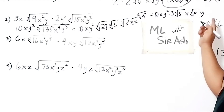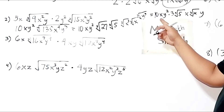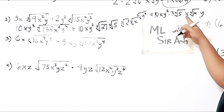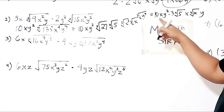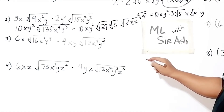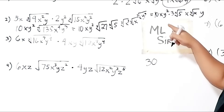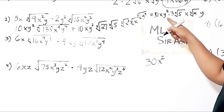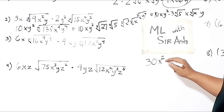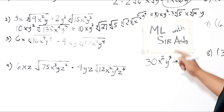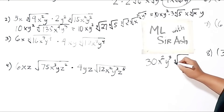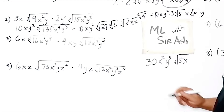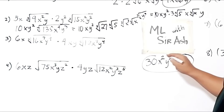Let us try to simplify. We copy our coefficient 10xy². The cube root of 27 is a perfect cube, so its answer is 3. The cube root of 5 stays as the cube root of 5. The cube root of x³ is x. The cube root of x remains the cube root of x. The cube root of y³ is y. Now combining coefficients: 10 times 3 is 30, x times x is x², y² times y is y³. For the cube root part: 5 and x combine to give the cube root of 5x. So the final answer is 30x²y³ times the cube root of 5x.